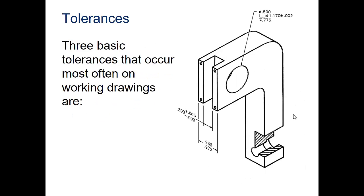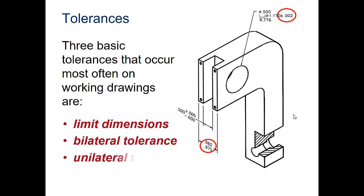Your basic tolerances that occur most often on working drawings are limit dimensions. They're giving you the upper and lower tolerances. Then you have bilateral, they're telling you 1.170 plus or minus .002, so it would be plus .002 larger or .002 smaller. And then you have unilateral tolerances. This one says plus .005 but the minus is .000, therefore it means that gap can be larger but cannot be any smaller than the dimension given.